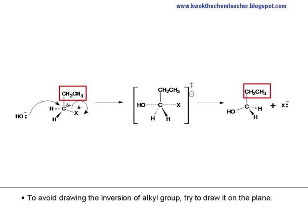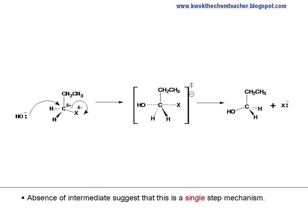To avoid drawing the inversion of the alkyl group, try to draw it on the plane. Absence of the intermediate suggests that this is a single-step mechanism.